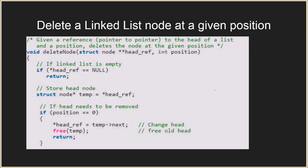Let's see this with the help of C code. We have a function deleteNode which takes two arguments: the first is a double pointer to the head, and the second is the position as an integer. First, we check if the linked list is empty, and if so we just return because we cannot delete an element from an empty linked list.